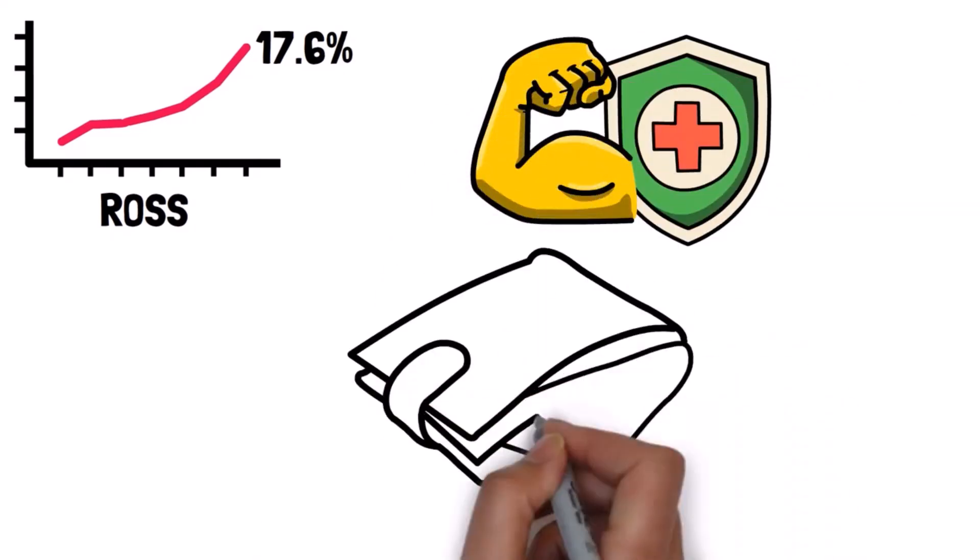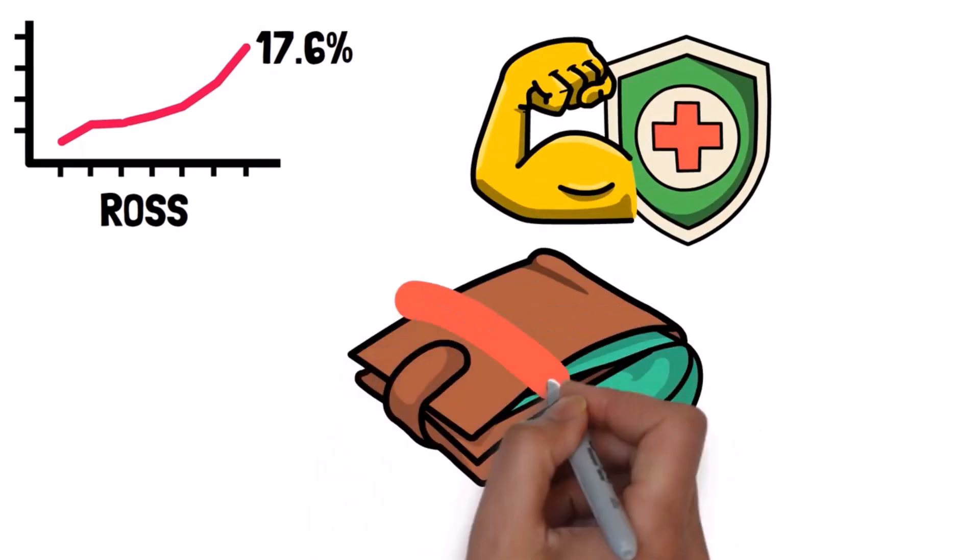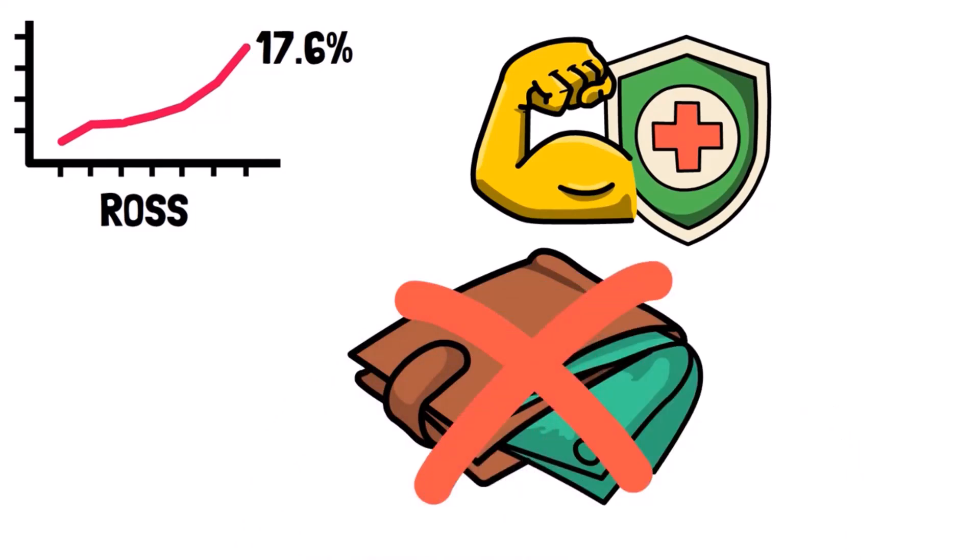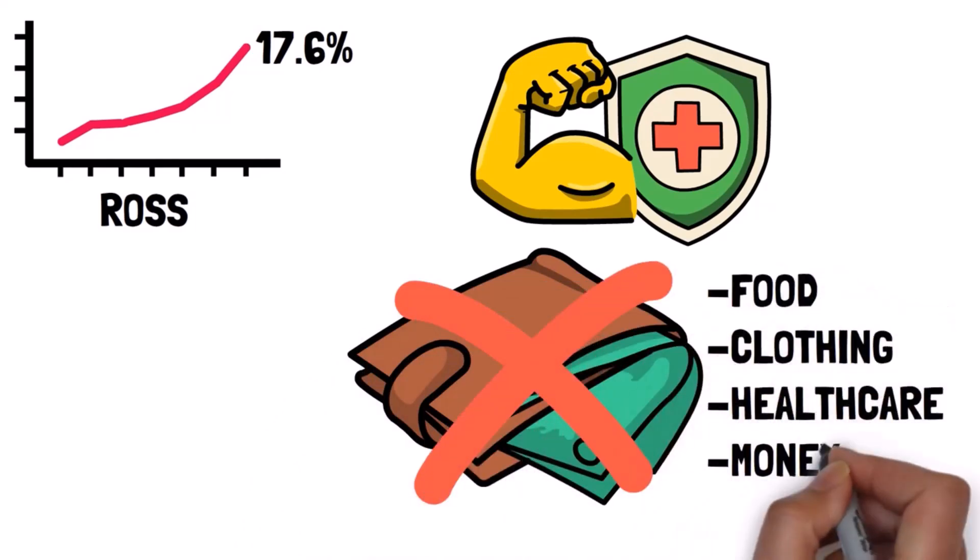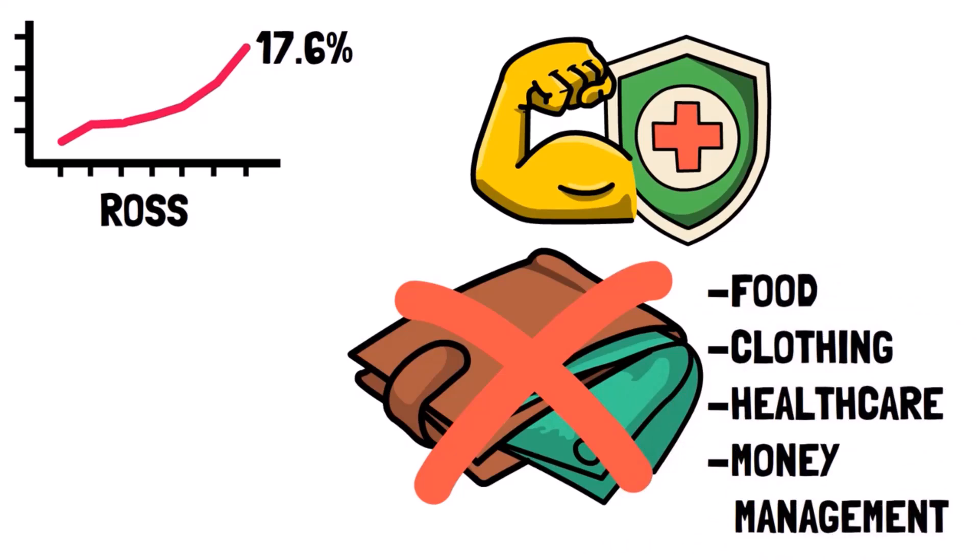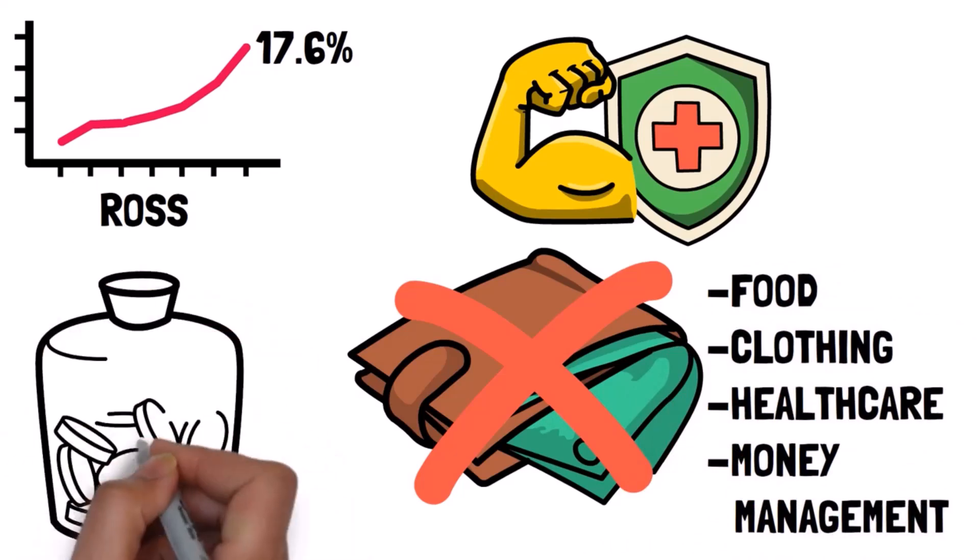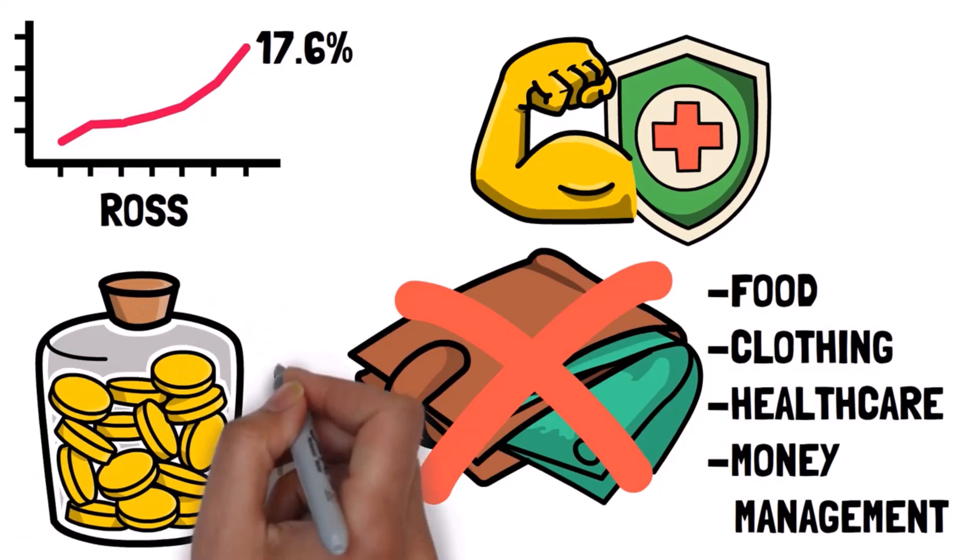The healthcare sector was also a strong performer. While it's essential to cut unnecessary expenses during a recession, certain essential goods like food, clothing, healthcare, and money management remain crucial.